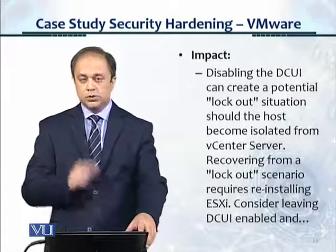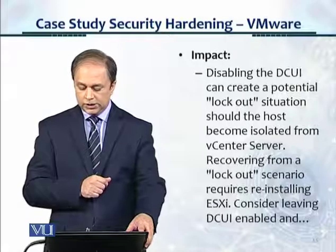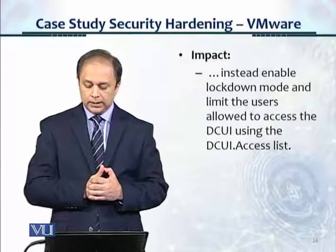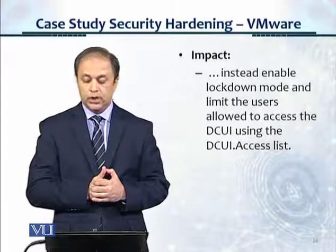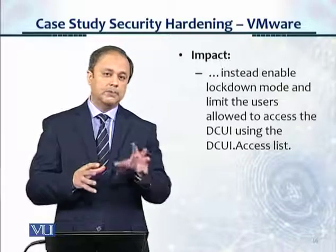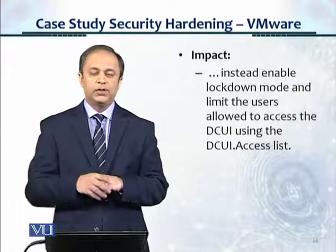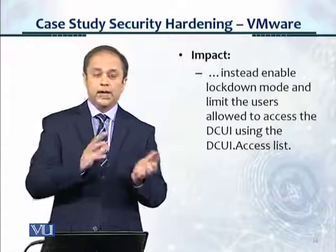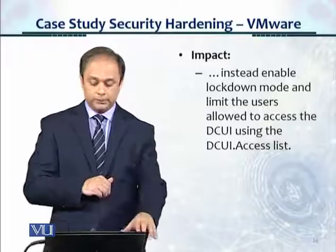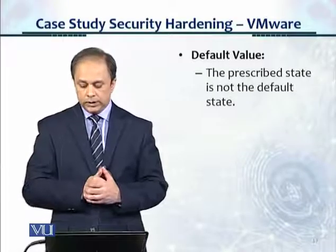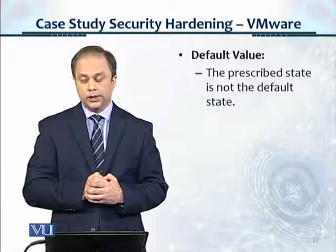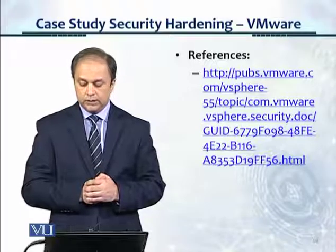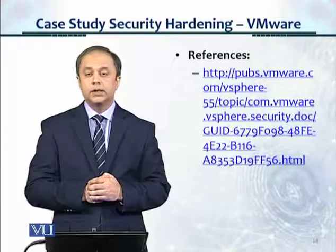Consider leaving DC UI enabled and instead enable lockdown mode and limit the users allowed to access the DC UI using the DC UI access list. This prevents vSphere from getting locked out by applying access control on DC UI as well. The default value — the prescribed state — is not the default state as mentioned. There are some references where it takes us to the VMware website, and that's all we have for this control.